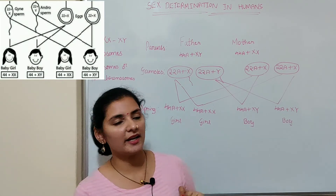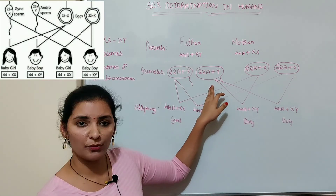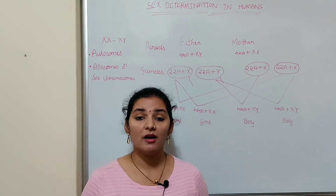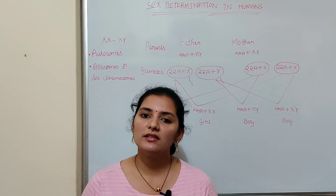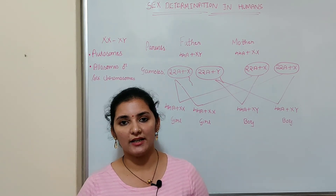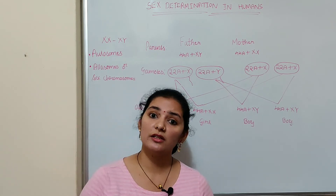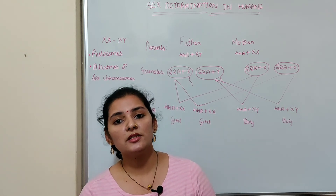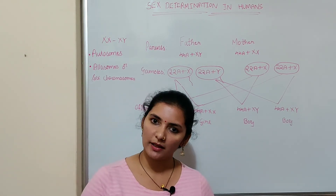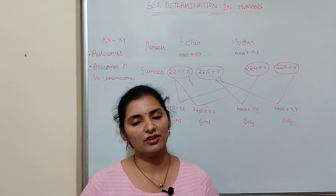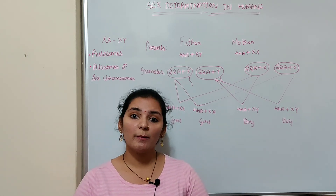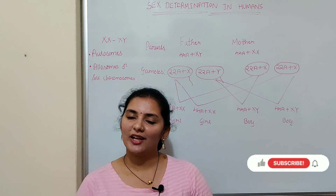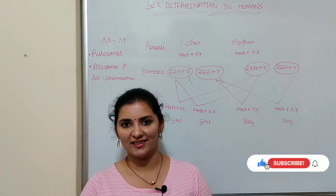From this it is very clear that the sex of the child is determined by the genetic makeup of the sperm — in other words, the male or the father is responsible for the sex of the child. But unfortunately in our society, mothers are blamed for giving birth to a female child. Giving birth to a girl or boy is purely a chance factor — every pregnancy has a 50% probability of giving birth to either a male or female child. That is all about sex determination in humans. I hope this video will be useful. If you like this video, please hit the like button and subscribe to my channel. Thank you.